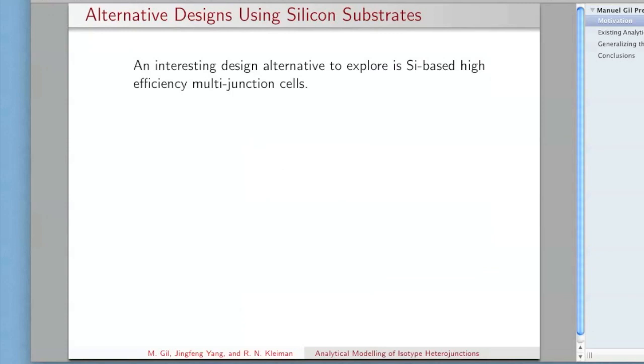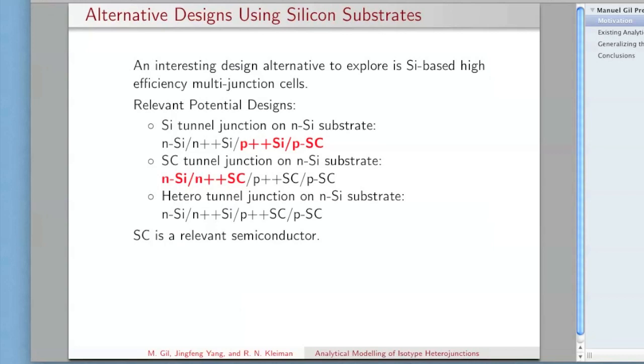An interesting idea that you can consider is to have alternative designs that essentially have the cells grown on silicon-based substrates. Some of the potential configurations that you could have look like this. Here SC is just going to be some random semiconductor that's relevant for the case. You could put the tunnel junction in the silicon, you could put the tunnel junction on the semiconductor, or you could put the heterotunnel junction connecting the two materials.